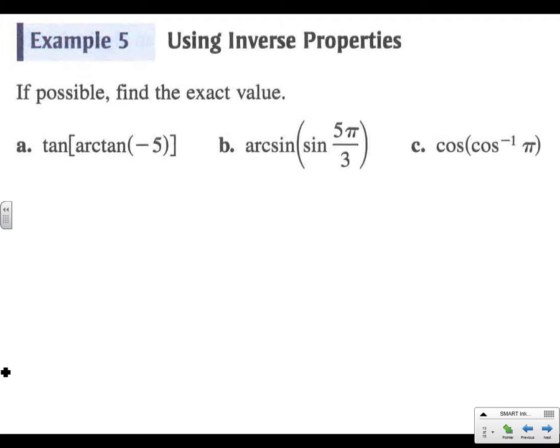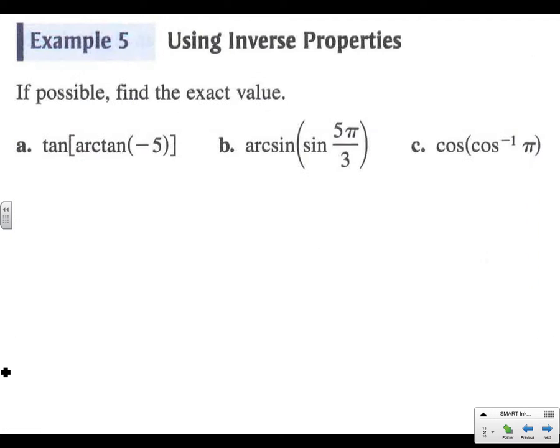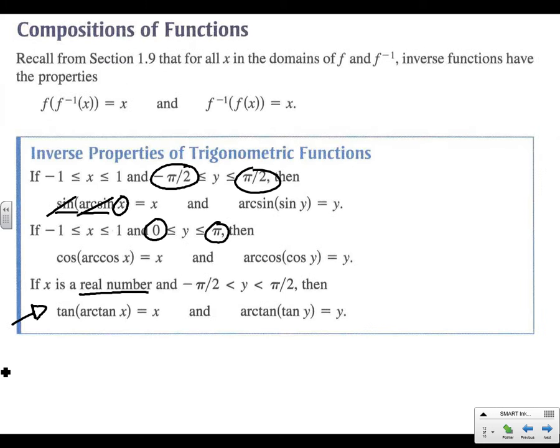Tan of arctan of negative 5. Let's really quickly flip back here and look at our domain and range. So on our answers here, it says if x is a real number. I'm looking down here at tan. So x can be any real number. So negative 5 is okay.